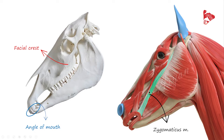The function of the zygomaticus muscle is to retract the lateral angle of the mouth and move it backward.